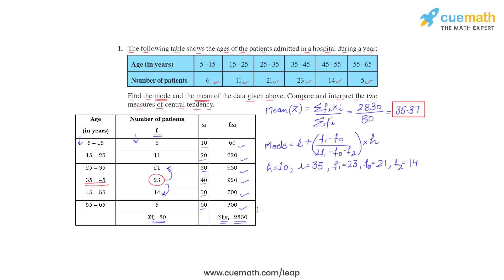So let's find the mode now. Substitute all the values. L 35 plus F1, 23 minus F0, 21, upon twice of F1, twice of 23, minus F0, 21, minus F2, 14, into H, 10. So we can calculate this and we will get the answer as 36.8. So the mode is 36.8.